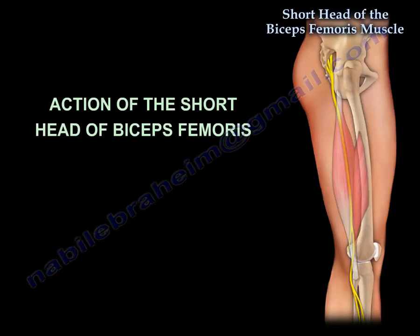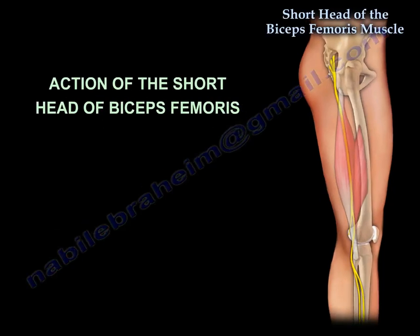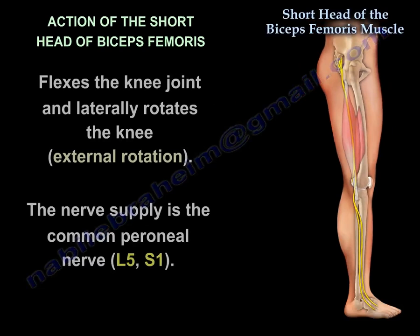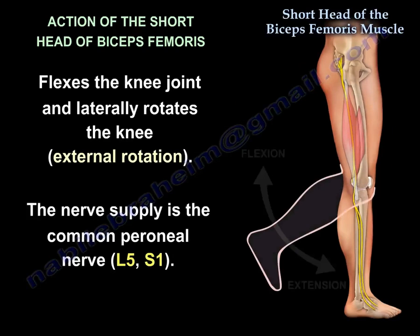Regarding the action of the short head of the biceps femoris: it flexes the knee joint and laterally rotates the knee, which is external rotation. The nerve supply is the common peroneal nerve, which is L5-S1.